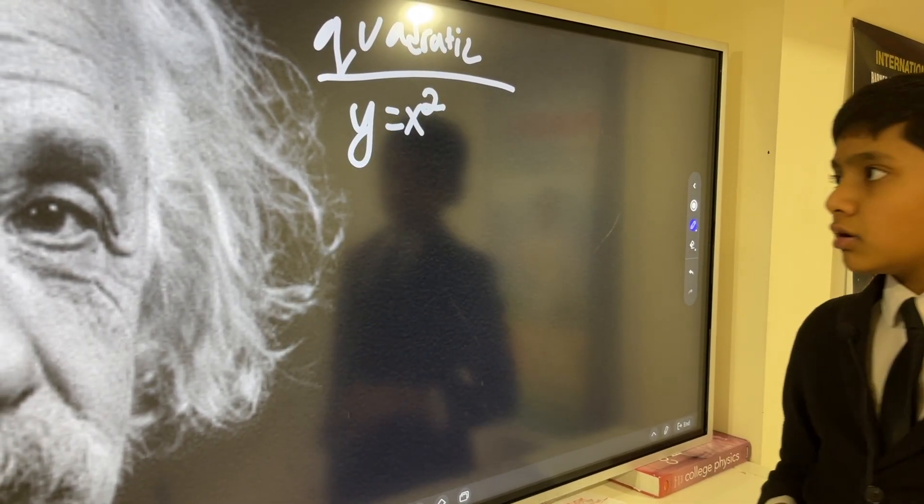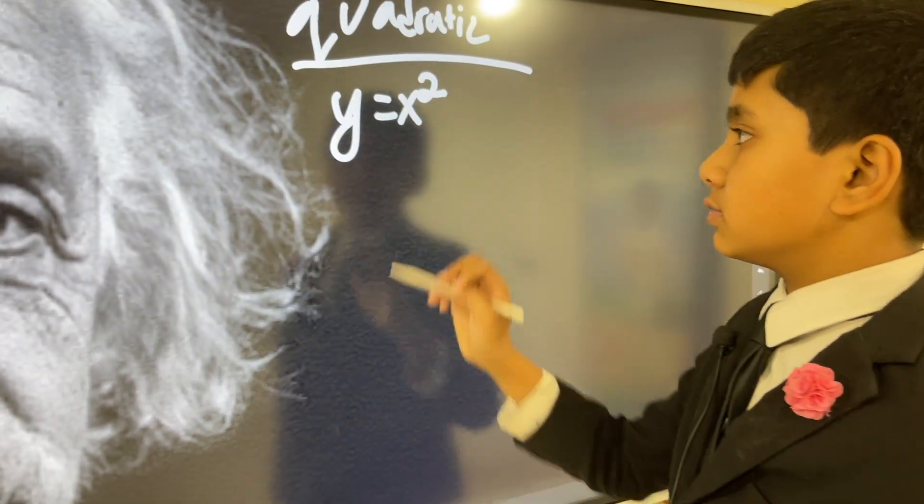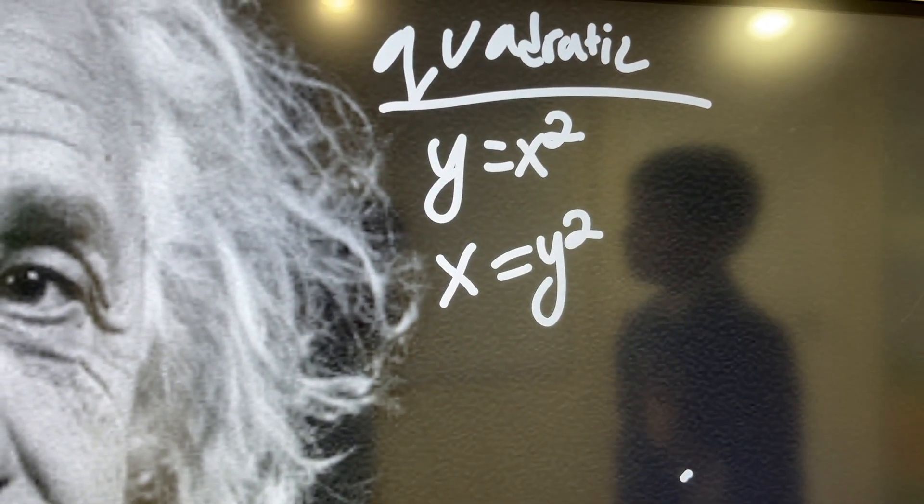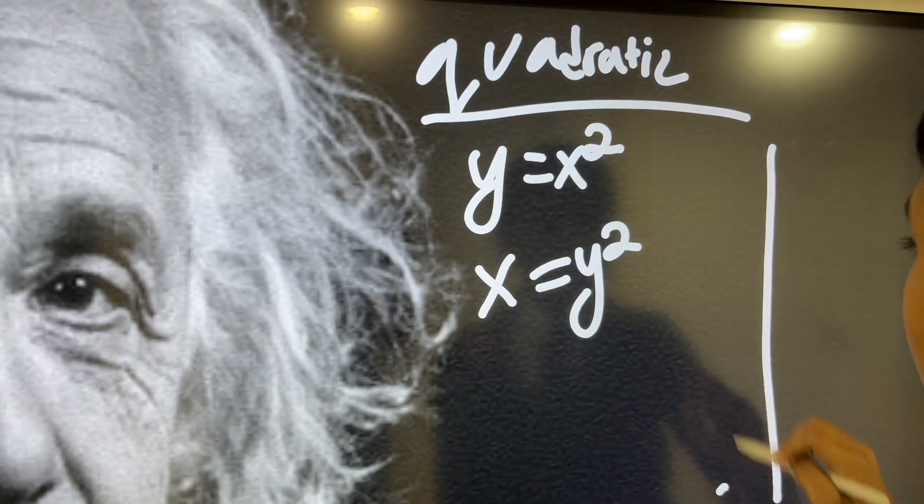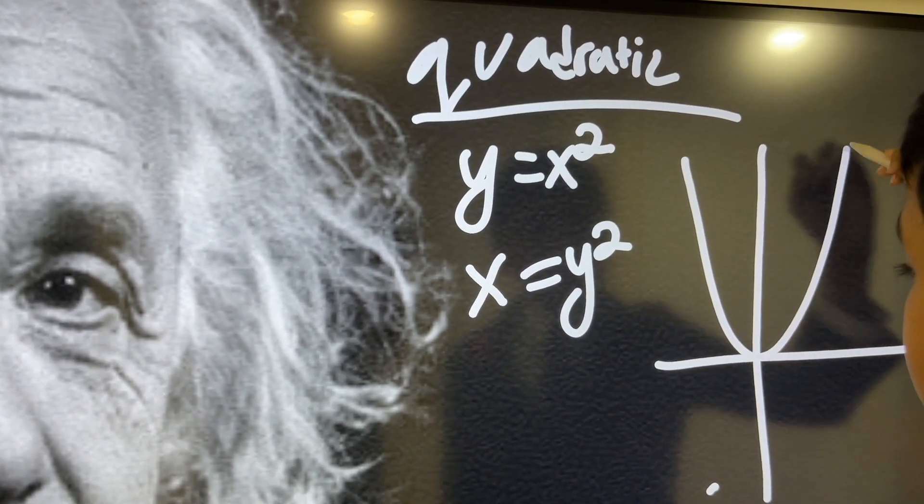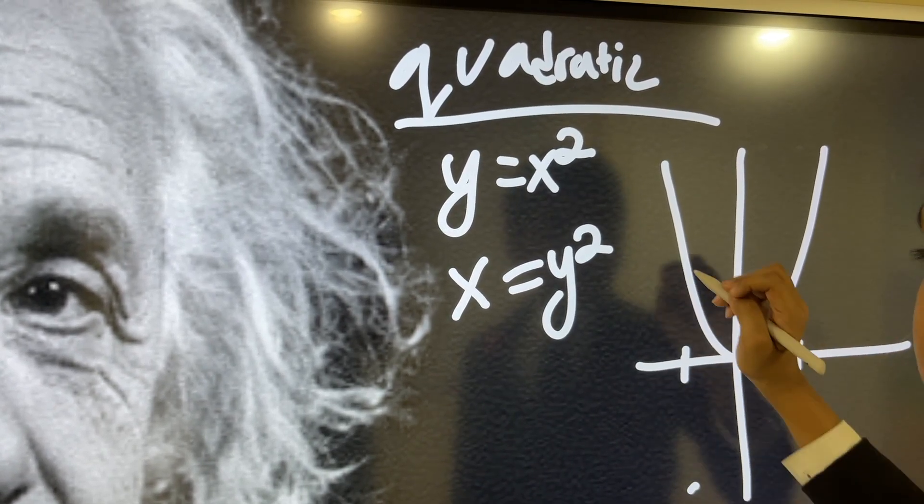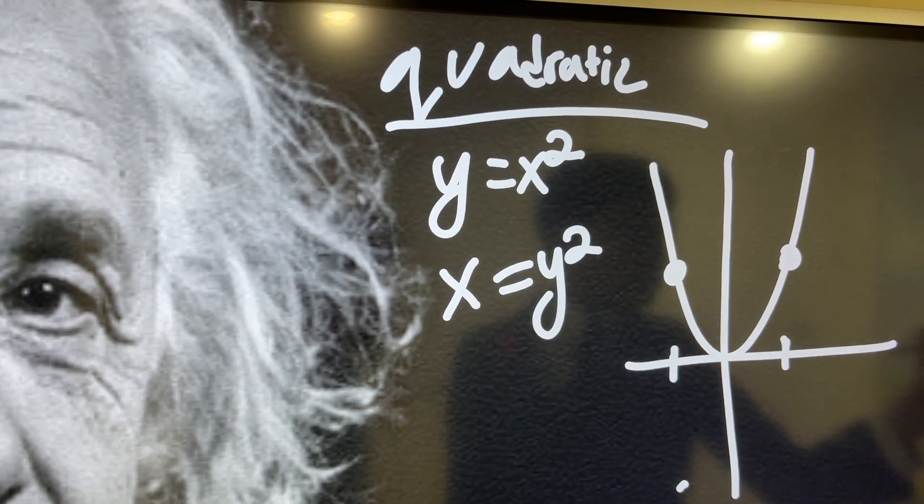Right now, we're just going to be seeing if y equals x squared is a function, and x equals y squared is a function. So, we saw, just a few minutes ago, y equals x squared is obviously a function, even though it is two inputs, one output.